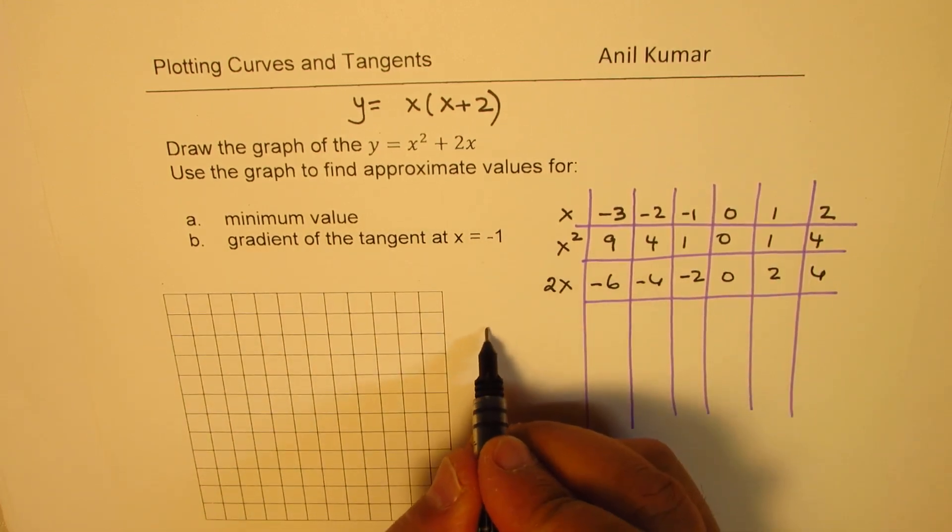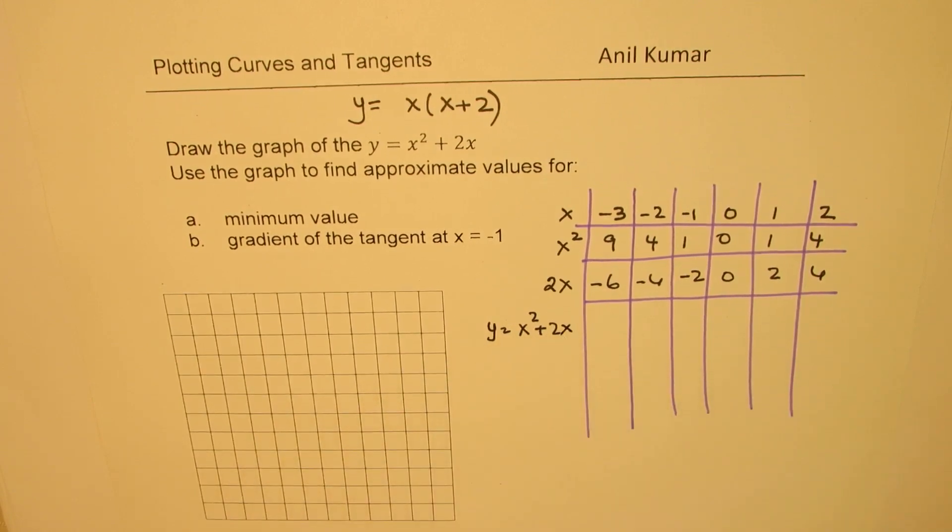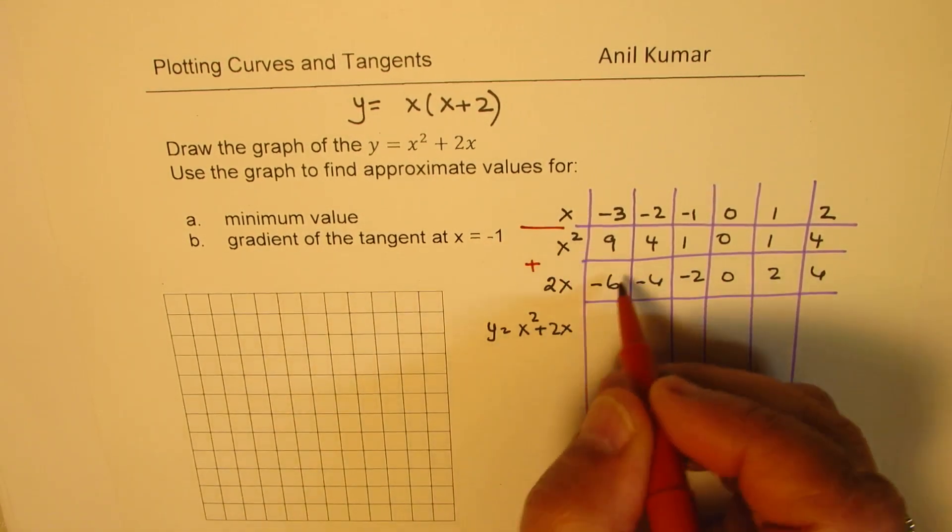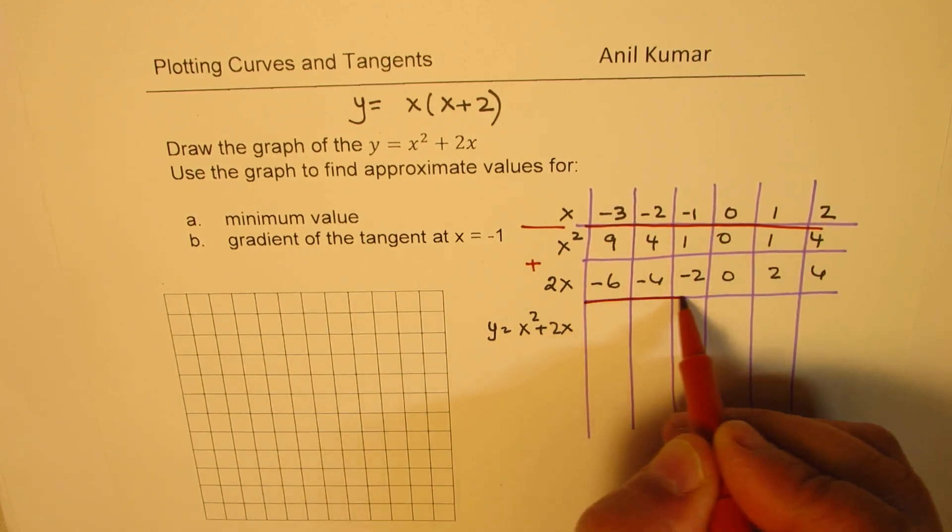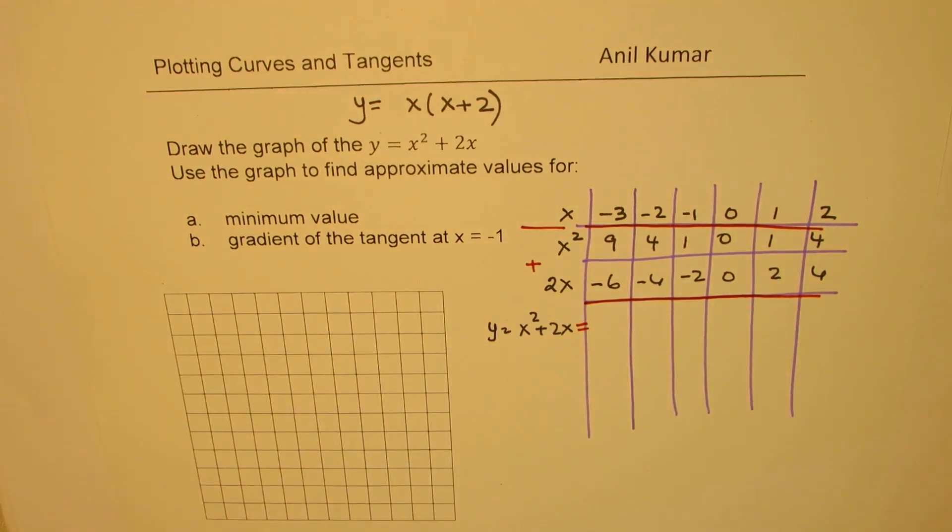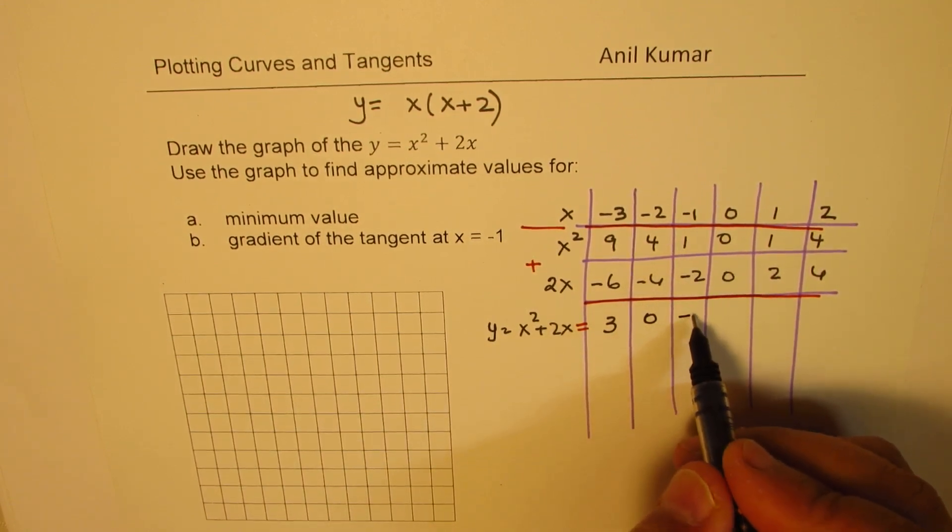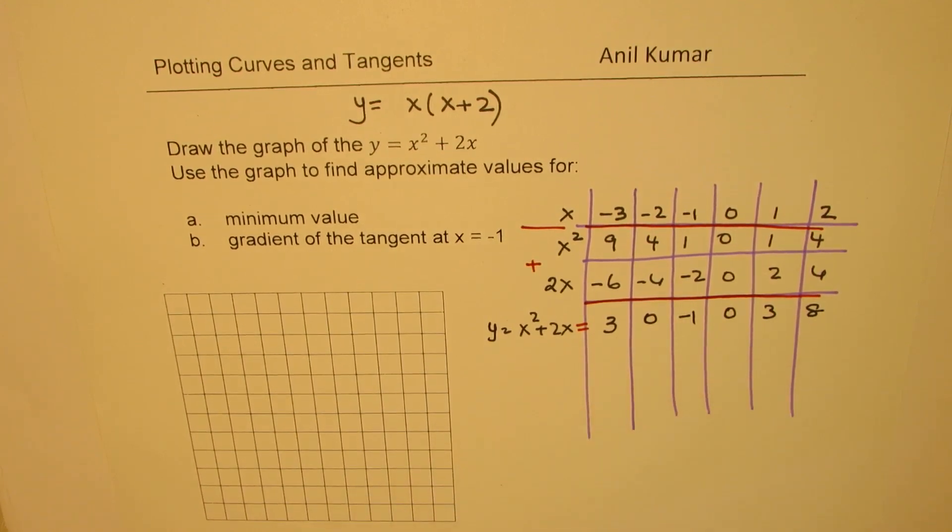The y value is equal to x² + 2x. That really means that we have to add these two quantities. So we'll add these two and get our results. So we are going to add everything which is in between these to get our values. So that gives us 3, that gives us 0 as expected and this is -1, 0, 3 and 8. So those are the coordinate points.